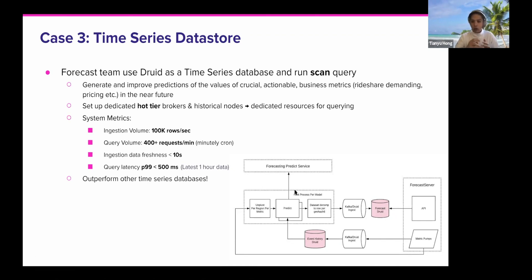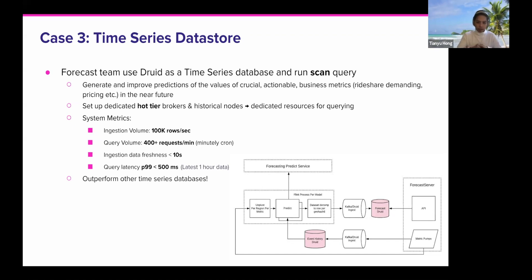Their framework uses a Flink app to ingest historical metrics into Druid, and they also have an API to constantly query Druid to get those historical metrics. They put those metrics into a model to generate forecasting results and then ingest those results back into Druid. Because they have pretty large ingestion and query volumes with tight SLAs, we set up dedicated hot-tier broker and historical nodes for them, providing isolated query resources separate from other data sources.